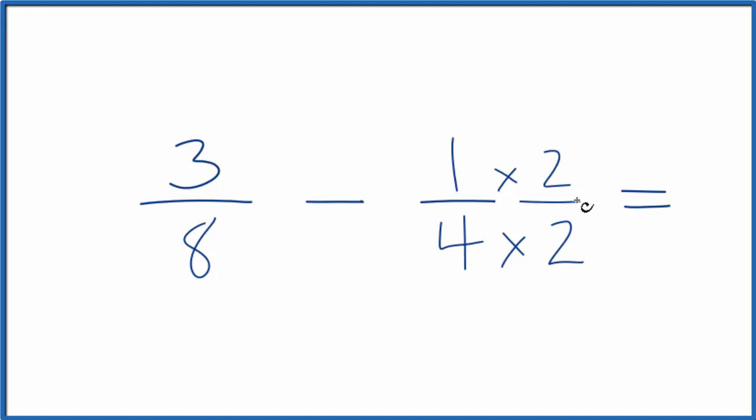2 over 2, that's just 2 divided by 2. It equals 1. So we're not changing the value, just the way we represent the fraction 1/4.